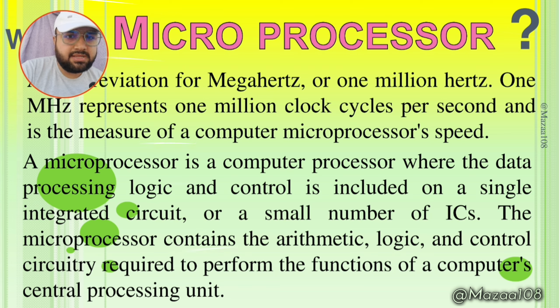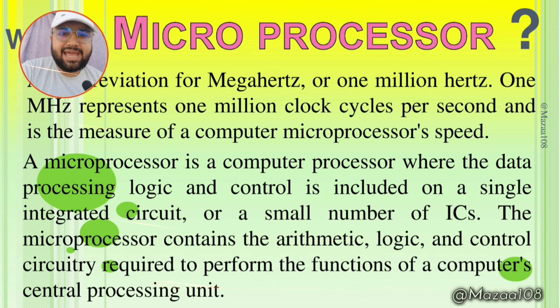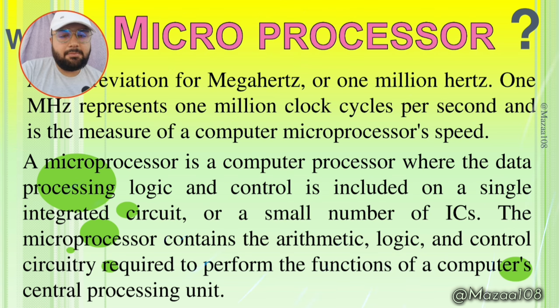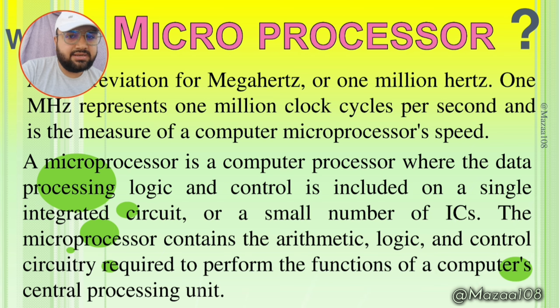What is a microprocessor? MHz is an abbreviation for megahertz, or one million hertz. One hertz represents one million clock cycles per second, and it measures a computer microprocessor's speed.